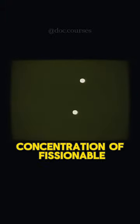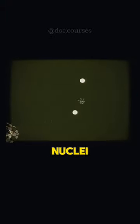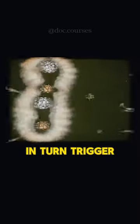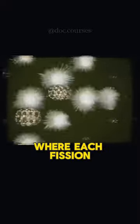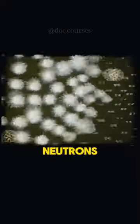Given a sufficient concentration of fissionable nuclei, these released neutrons can in turn trigger further fission events. This sets off a chain reaction, where each fission event generates more neutrons, which then cause further fission in other nuclei.